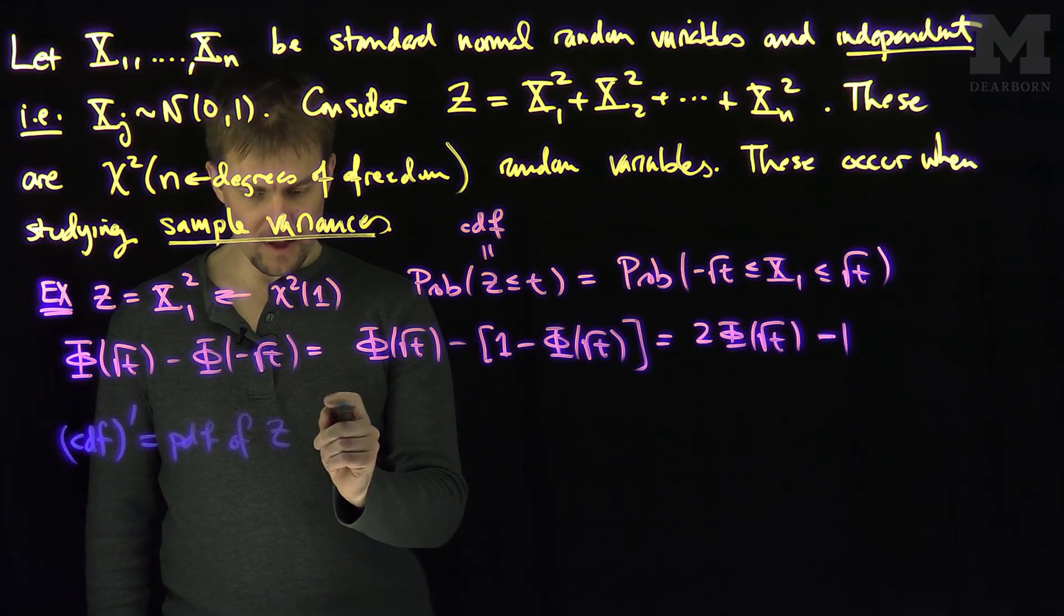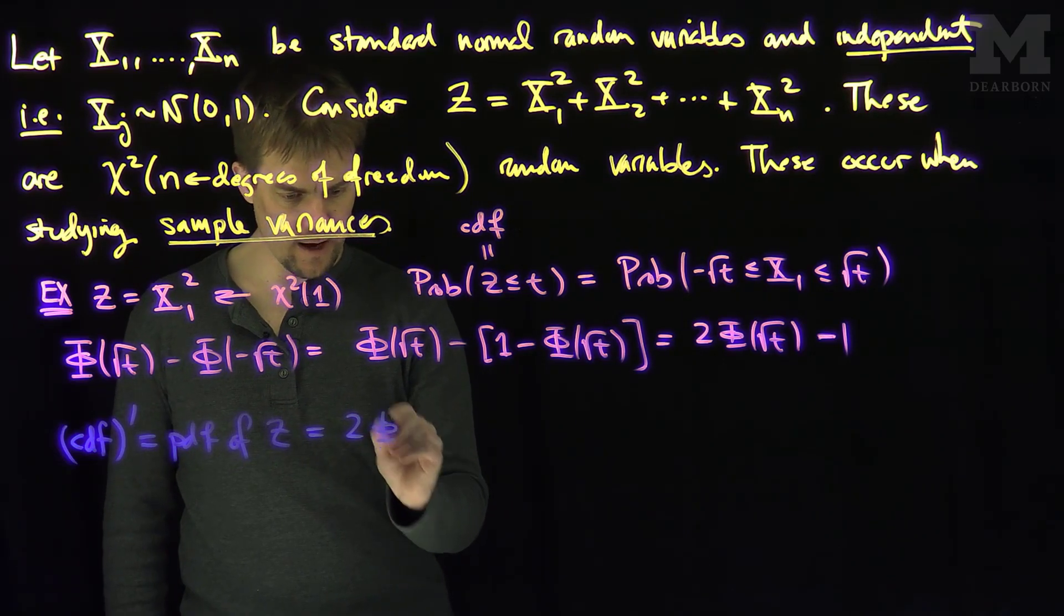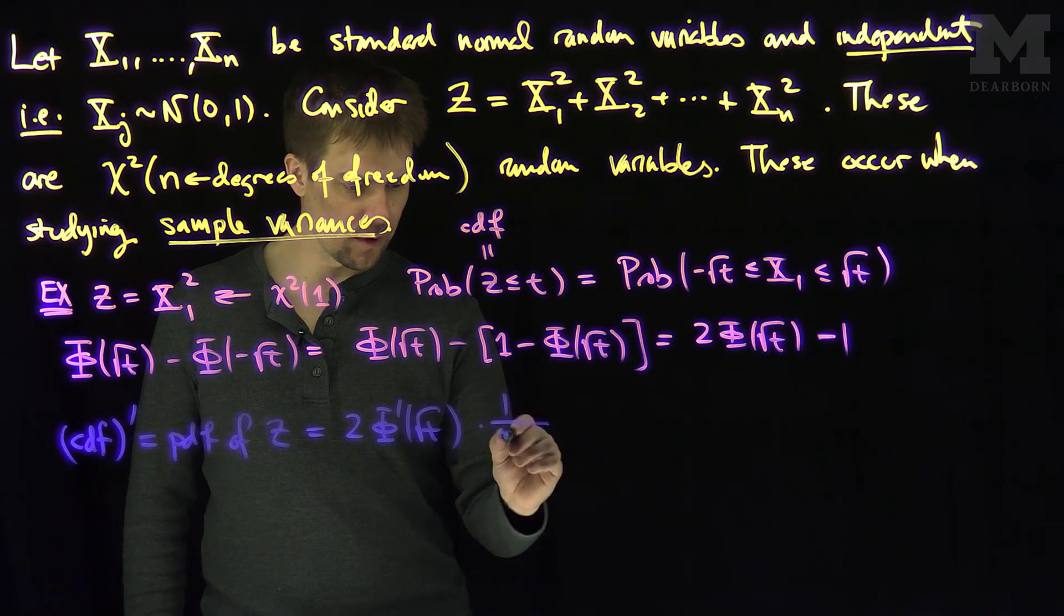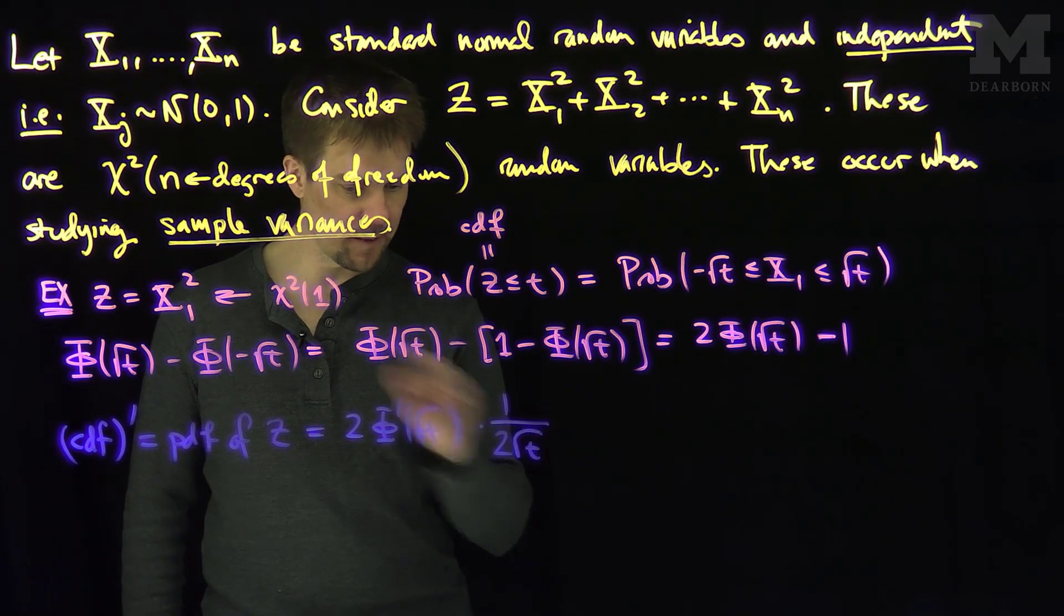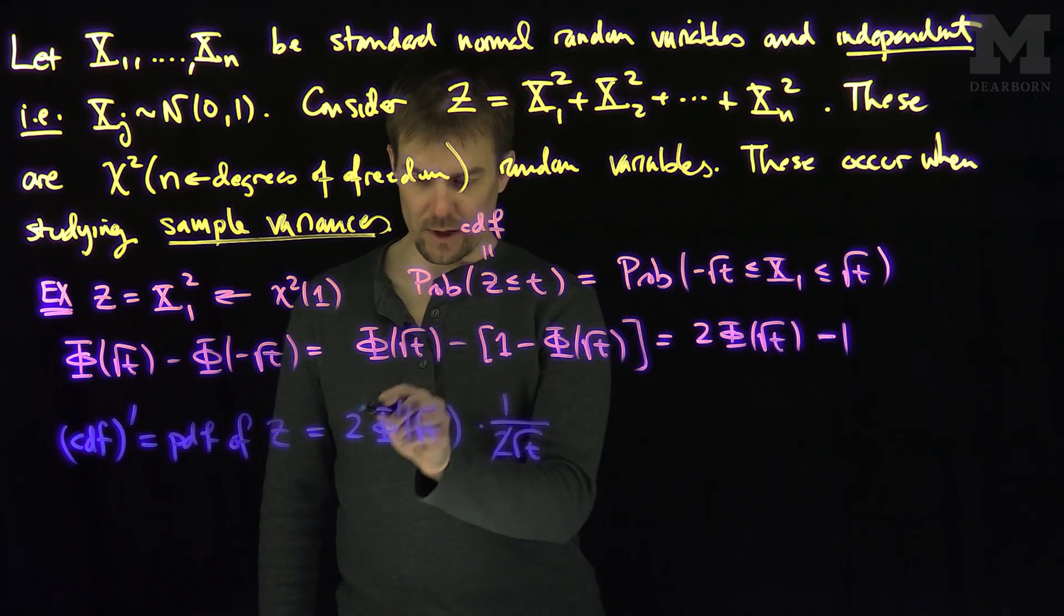And so, the PDF of z is going to be two phi prime of square root t times one over two square root t. That's the chain rule, and the derivative of one is nothing. So, the twos are going to cancel out.